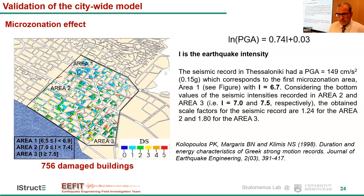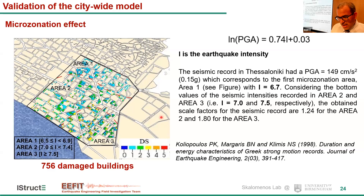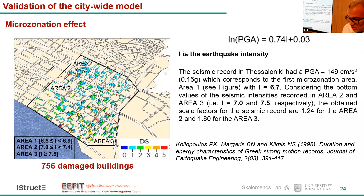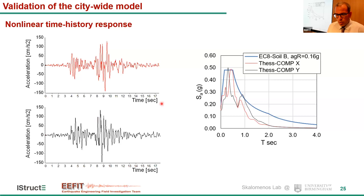The equation provided by Koliopoulos correlates earthquake intensity with the PGA of the ground motion. Using this equation, we determine the PGA for each area and the corresponding scale factors for the time history analysis. The ground motion histories show the acceleration for the X and Y components, and the response spectrum is compared with the Eurocode design response spectrum. For the period range of 0 to 1 second — which covers the buildings examined — the energy imposed is quite high, very similar to the design response spectrum.